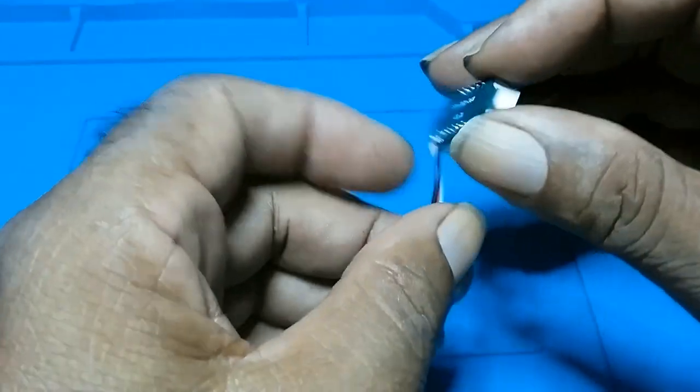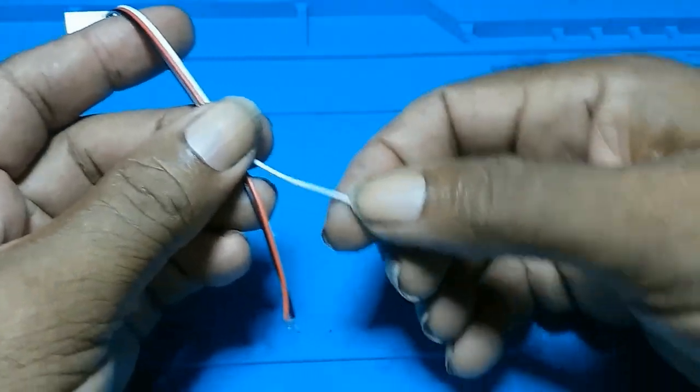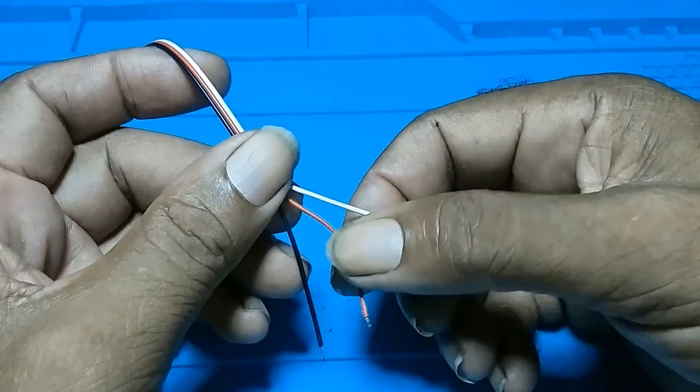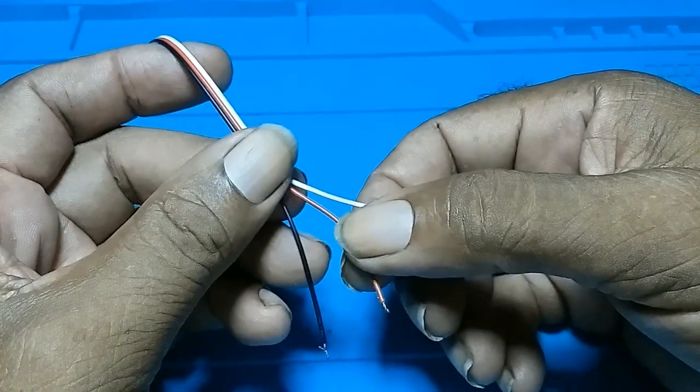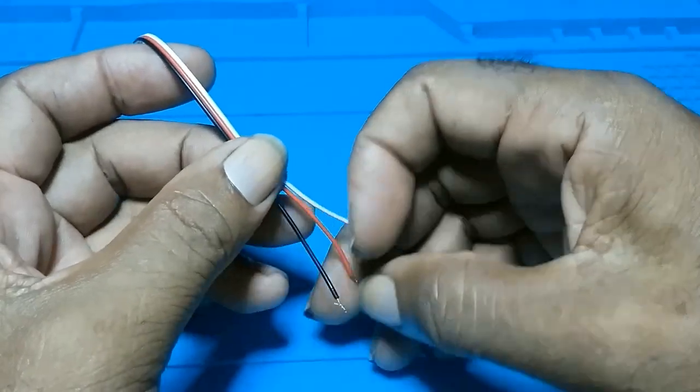It has three wires: the white wire is the sense wire, the red wire is positive, and the black wire is negative.